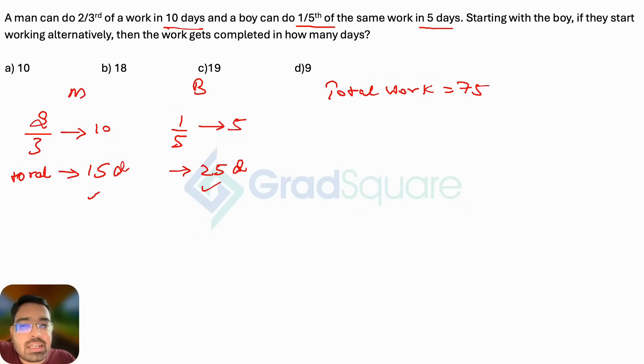So the total work if I presume it as 75 units, in 15 days a man will complete 75 units of work. That means every day the man would cover five units. So five units per day will be the number of units done by a man every day.